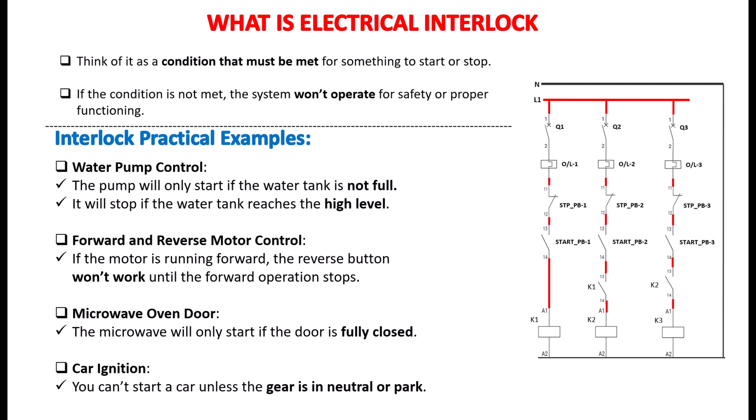It stops the pump from running when it's not needed. You may experience forward and reverse motor control. Picture a motor that can run forward or in reverse. If the motor is already running forward, you can't press the button to run it in reverse until it stops running forward. This is another example of an interlock. It makes sure that both actions don't happen at the same time.